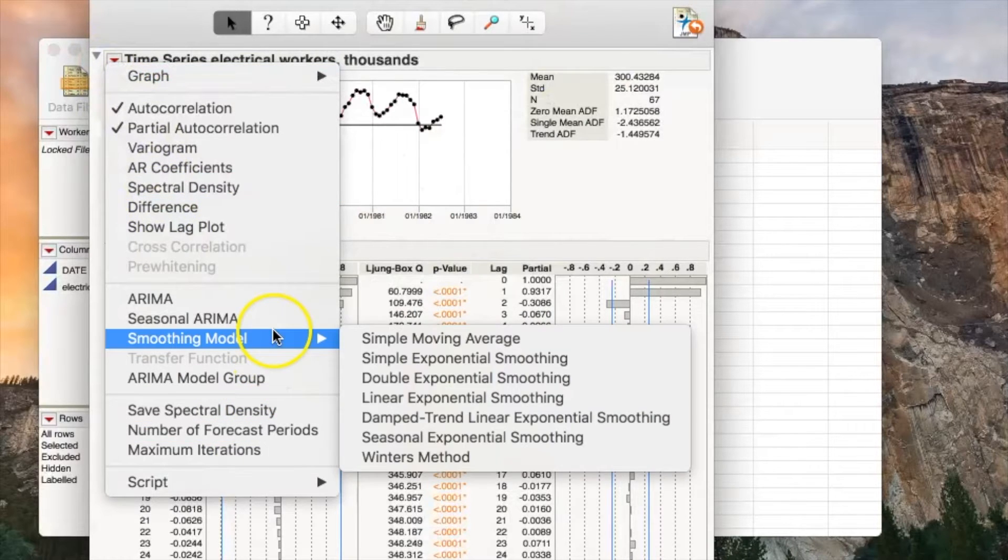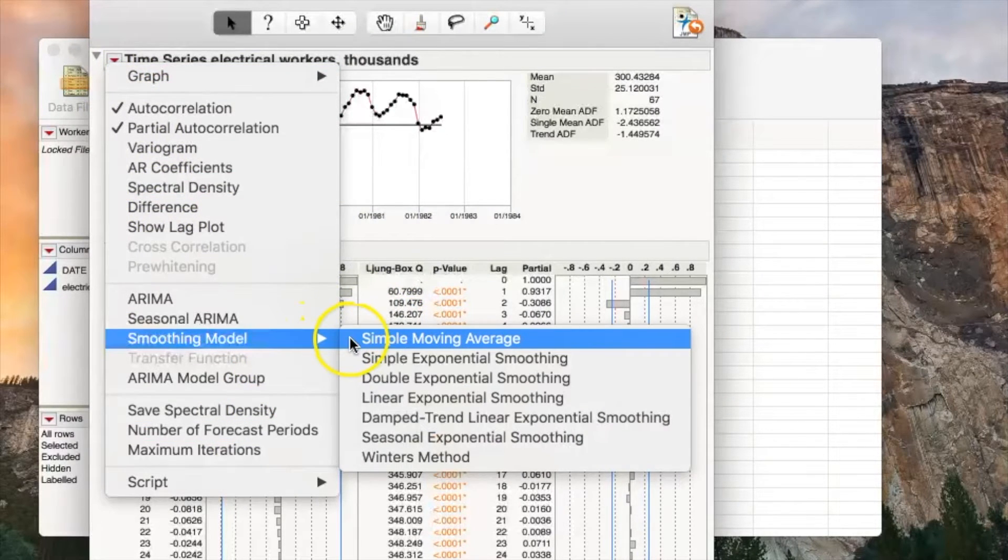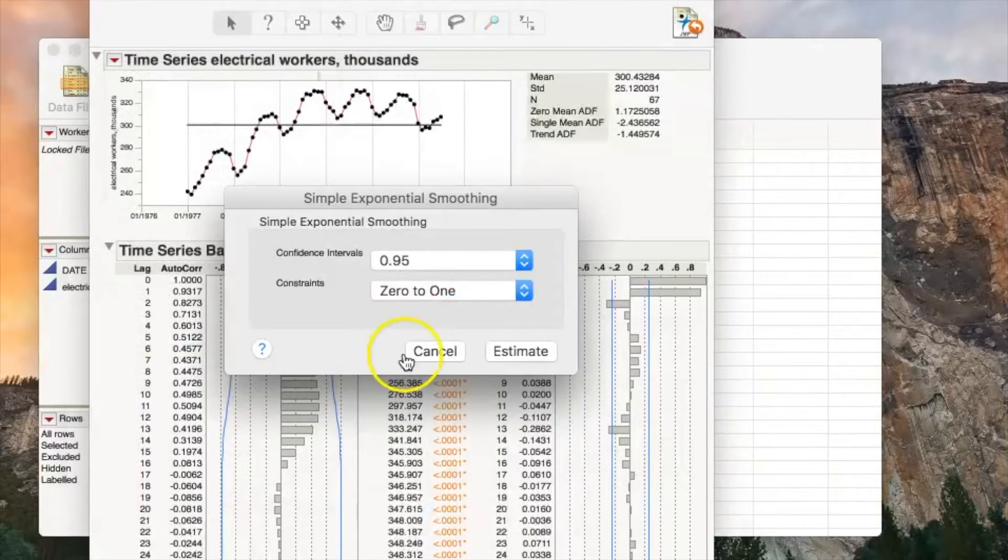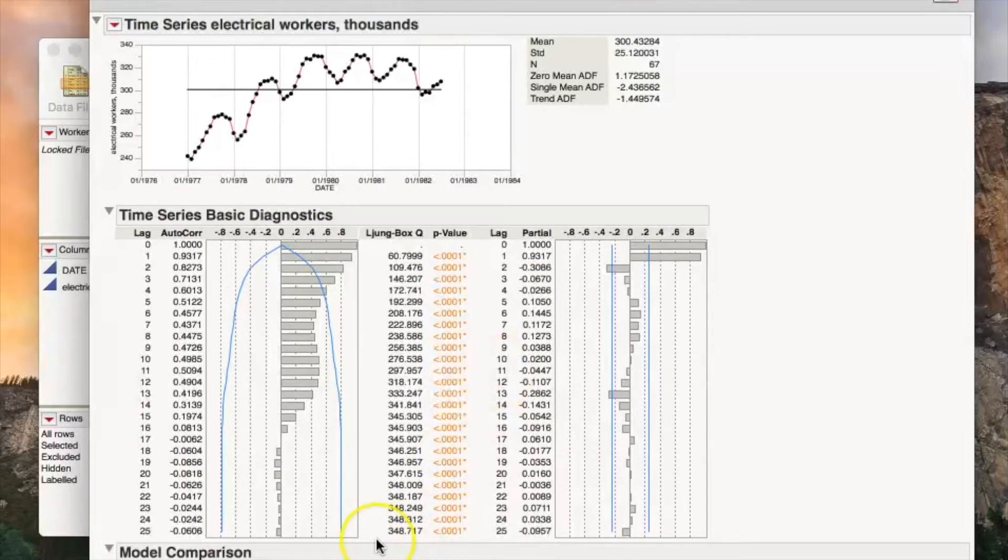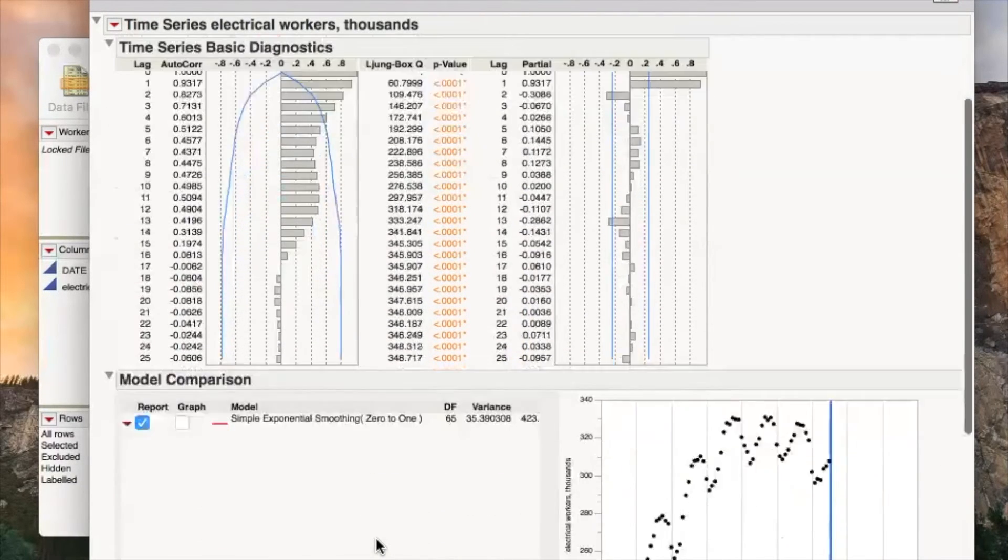Then, using the red triangle in the left corner, we go to Smoothing Model and choose the smoothing model that may be the best fit. In this case, we chose Simple Exponential Smoothing.